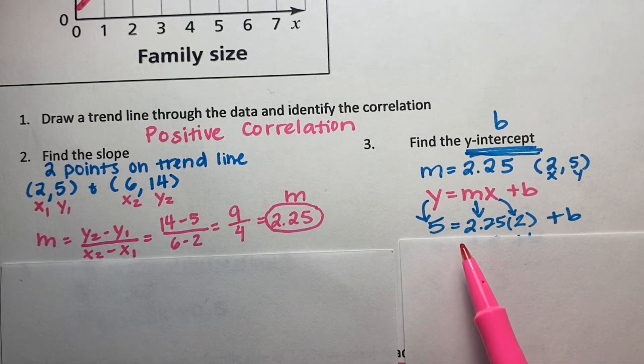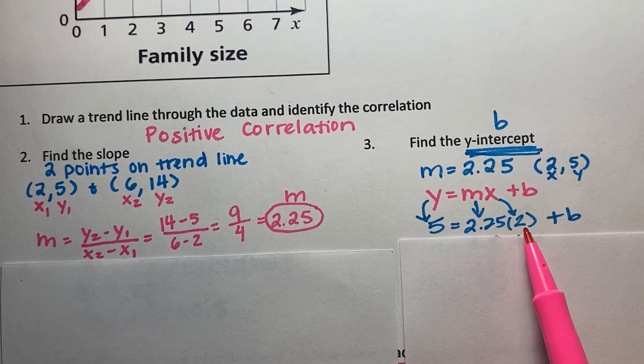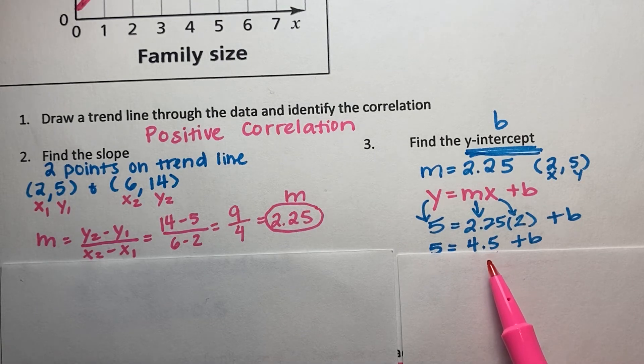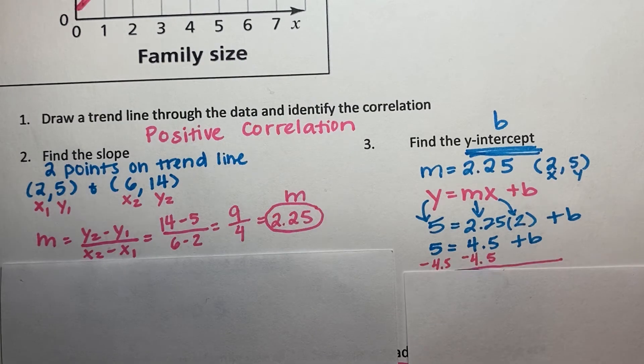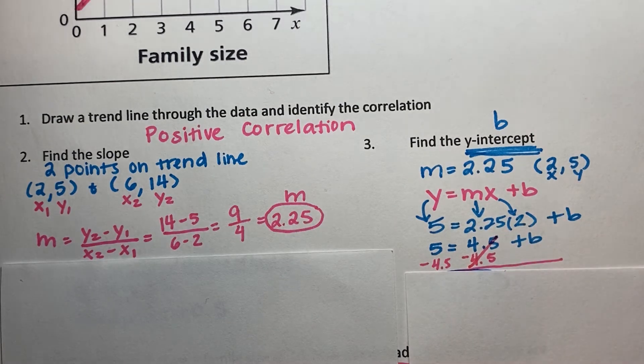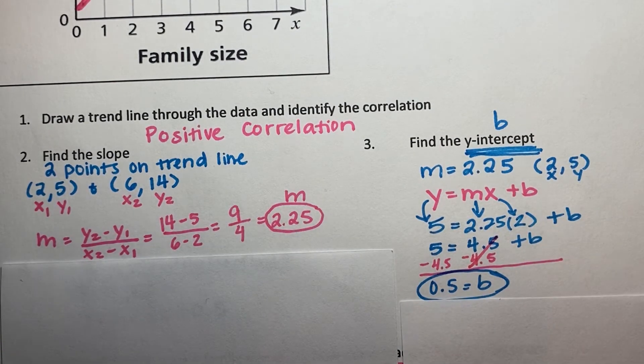So I should have 5 equals 2.25 times 2 plus b. When I simplify, 2.25 times 2 is 4.5. And then I still need to solve for b. So I'm going to subtract 4.5 from each side of the equation. When I do that, it will cancel on the right. And so 5 minus 4.5 is going to be 0.5, which equals b.